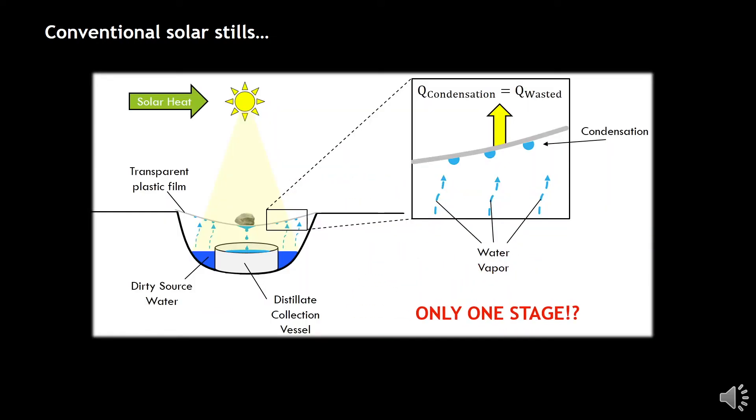In short, they use the heat from the sun to produce water vapor that is then condensed and collected as pure water. However, during this condensation event, an extensive amount of heat is wasted as it is released into the environment.